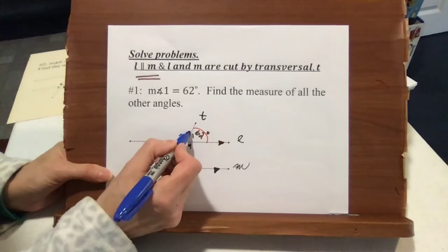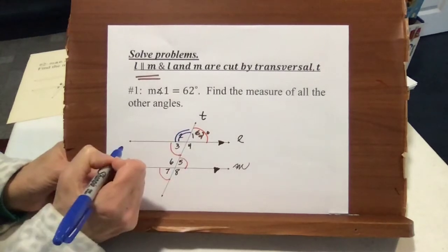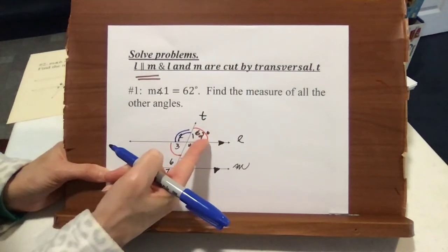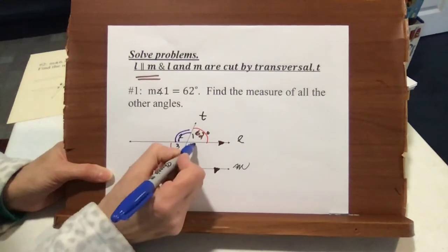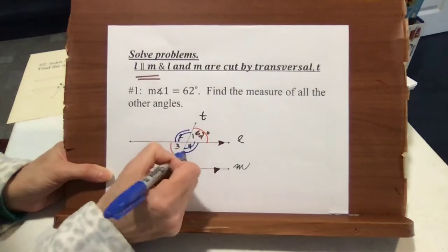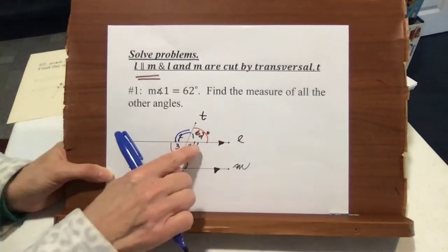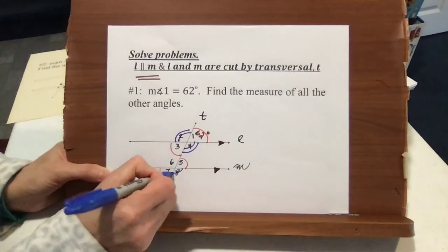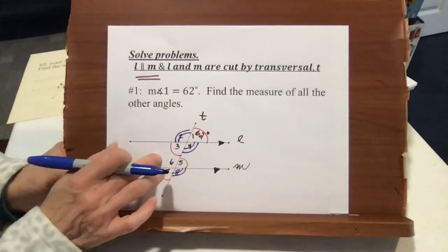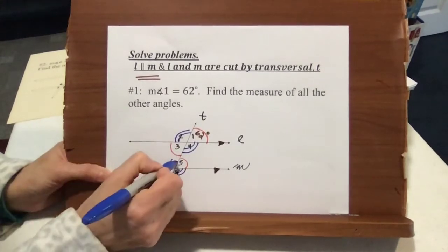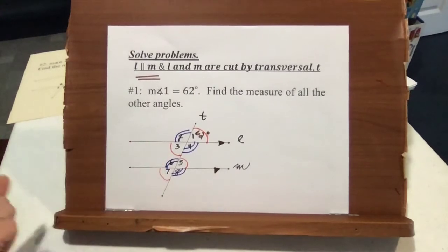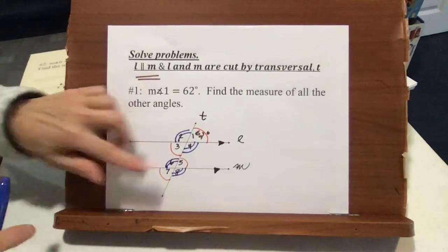Now angle 2 — double tick marks so we don't confuse it with angle 1 — is the same as angle 4, so we'll double tick mark that. Angle 4 corresponds with angle 8, so they're congruent. Angles 8 and 6 are vertical, and also angles 2 and 6 are congruent because they're corresponding.